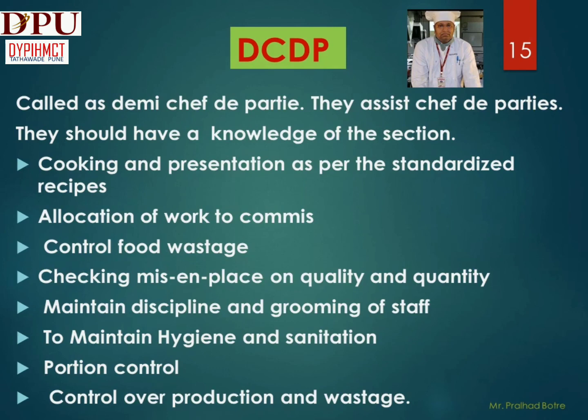Demi Chef de Partie (DCDP): They assist chef de parties and are the head of the section in the absence of the chef de partie. They should have very good knowledge of the section. He is responsible for cooking and presentation as per the standardized recipes. He allocates work to commies, and also controls food production and wastages. Checking mise en place on quality and quantity. He maintains discipline and grooming of staff. He also maintains hygiene and sanitation standards at all times. He is responsible for portion controlling.